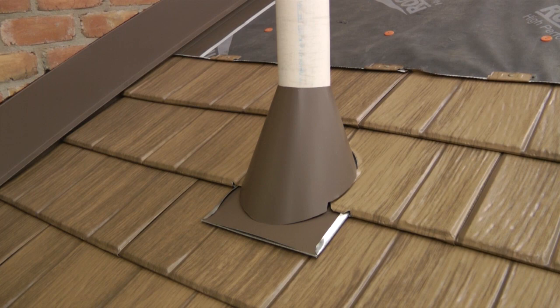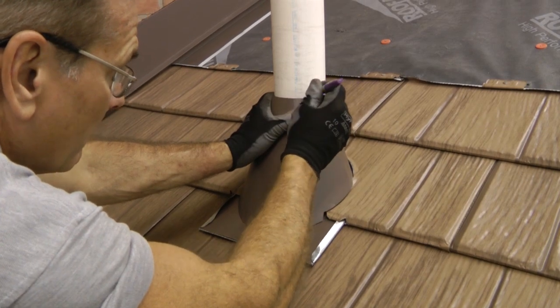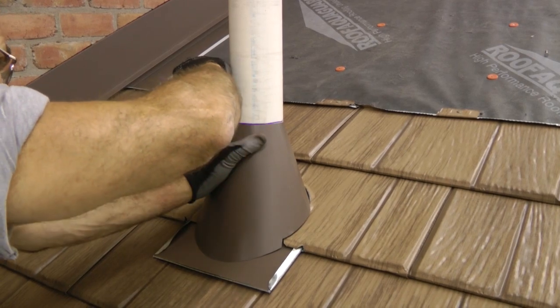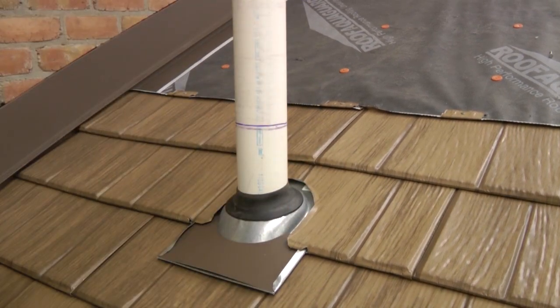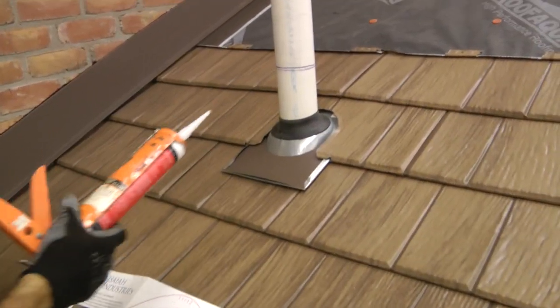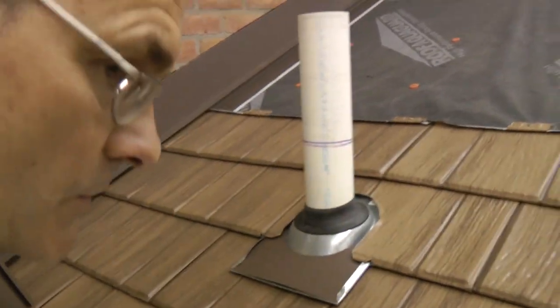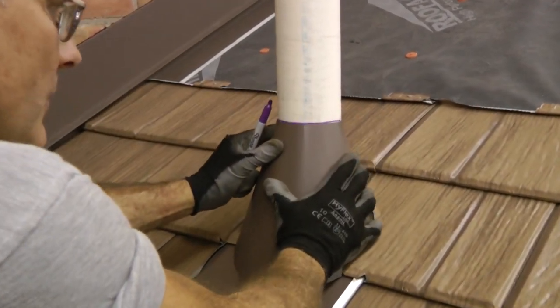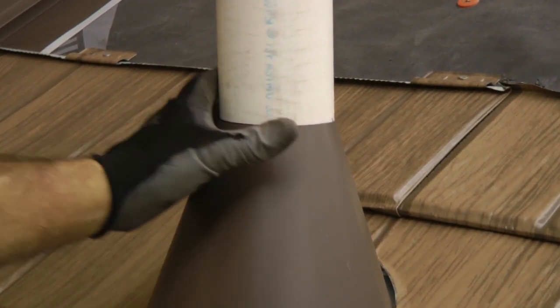I would then, after putting that in place, take a marker and I'm going to mark exactly where this cone is going to come down to. I'll take it back up, and then I'm going to take my caulking gun with my sealant and I'm going to run a bead of sealant right above that line so that when I put the cone back in place, it's going to come down and that sealant is going to seal that gap between the cone and the pipe.